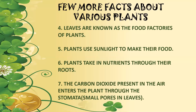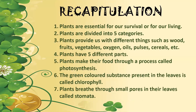Let's quickly recapitulate: First, plants are essential for our survival. Second, plants are divided into five categories. Third, plants provide us with different things such as wood, fruits, vegetables, oxygen, oils, pulses, cereals, and more. Plants have five different parts. Plants make their food through a process called photosynthesis in the presence of sunlight. The green-colored substance present in the leaves is called chlorophyll, which gives plants their green color. And plants breathe through small pores in the leaves called stomata.